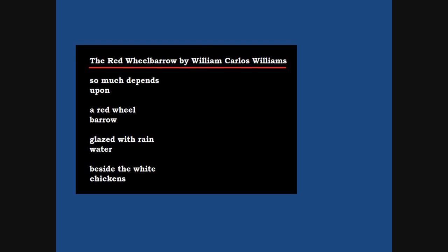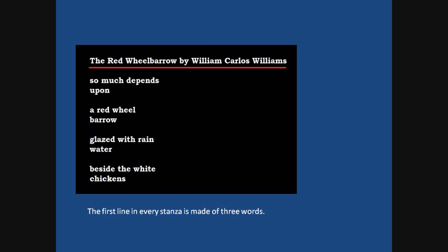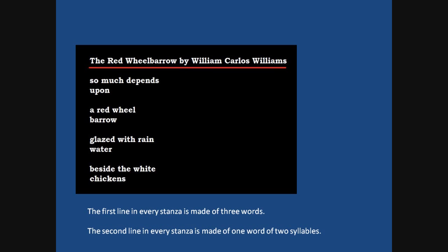The first line in every stanza is made of three words: 'So much depends,' 'A red wheel' — think about that one. It's not really 'a red wheel' because the line is 'a red wheelbarrow,' and 'wheelbarrow' is really one word, but he splits it with no hyphen. Three words there. 'Glazed with rain' — and again, it's not really 'rain,' it's 'rainwater.' And then 'beside the white chickens.' Three words in each of those first lines. And then in the second line, one word with two syllables: 'upon,' 'barrow' (part of wheelbarrow), 'water,' and 'chickens.' So that's a kind of form — it doesn't make any sense. There's no reason, except maybe the long and short lines to make it look like a wheelbarrow, but in terms of the number of words or syllables, he didn't really have to do that.